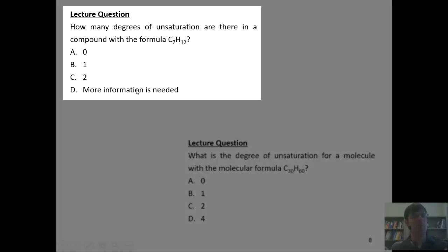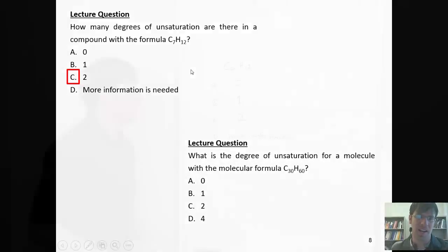In this question up here, we're asked how many degrees of unsaturation there are in a compound with the formula shown here. The correct answer is C. If you want to know why, I'll show you right now.